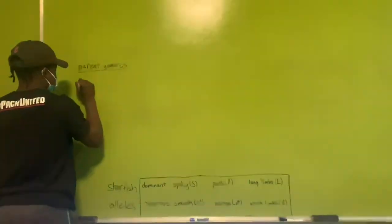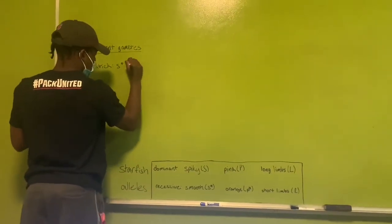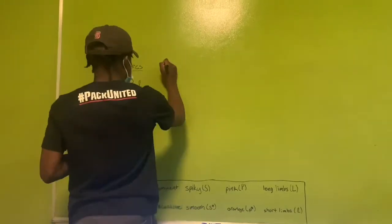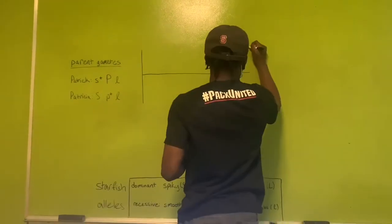Patrick, a smooth pink short-limbed starfish, and Patricia, a spiky orange short-limbed starfish, had children.